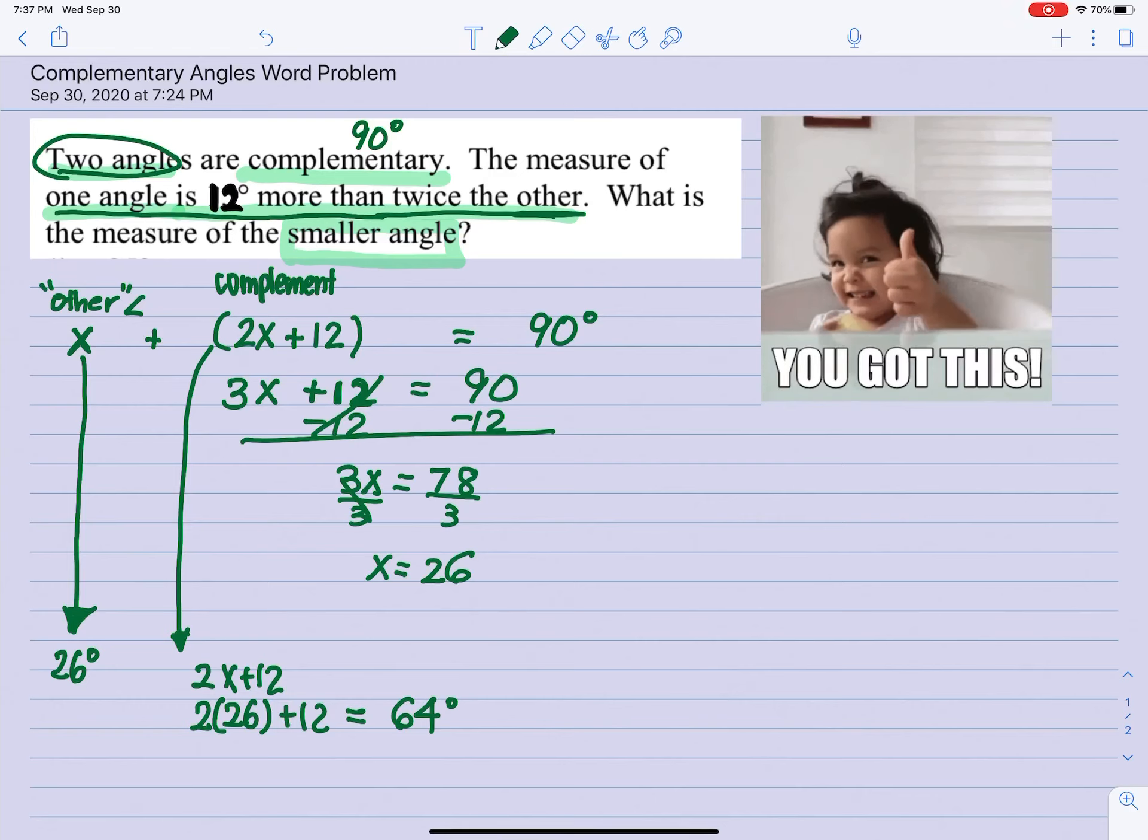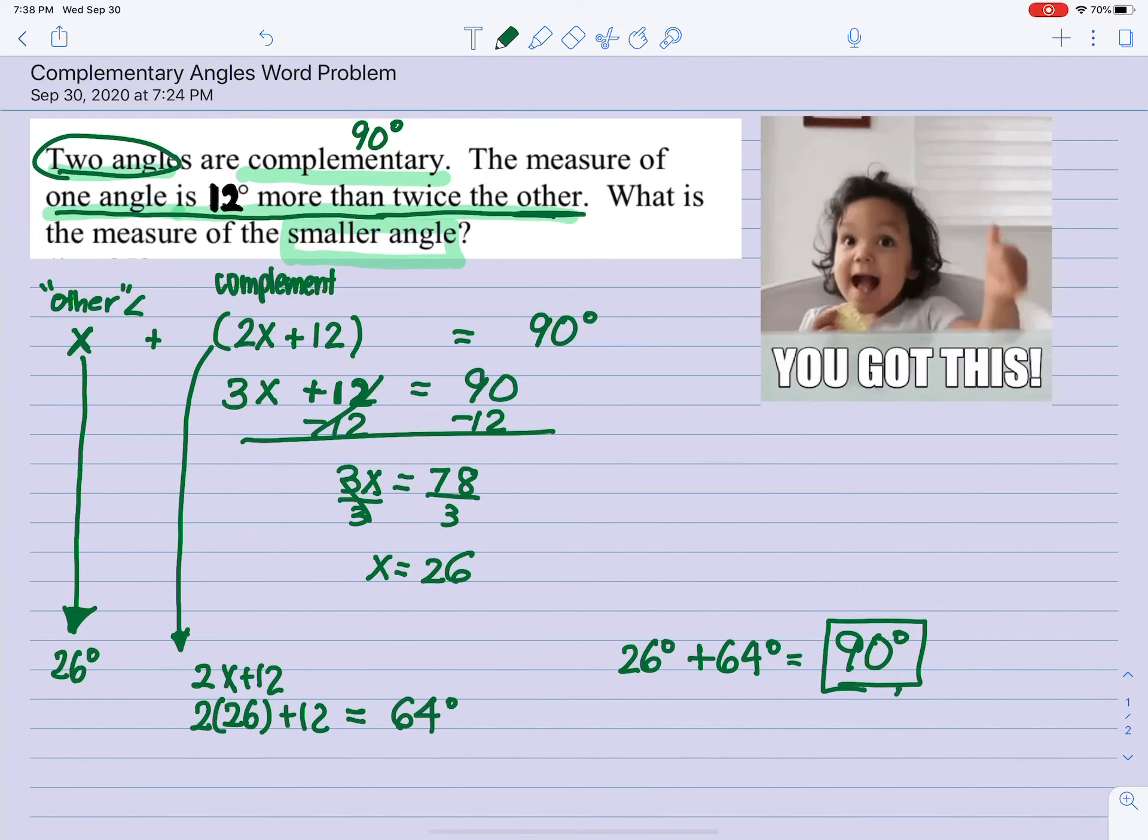Well, let's check if our math is correct. We have 26 degrees and 64 degrees. And when you add those up, indeed it is 90 degrees, so it is complementary.